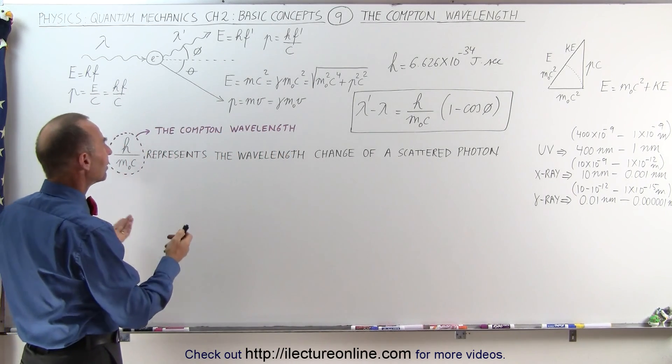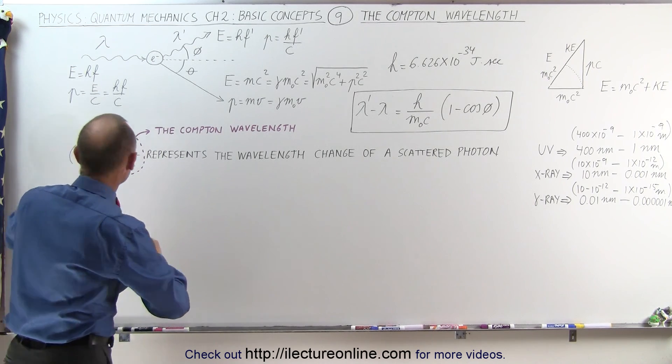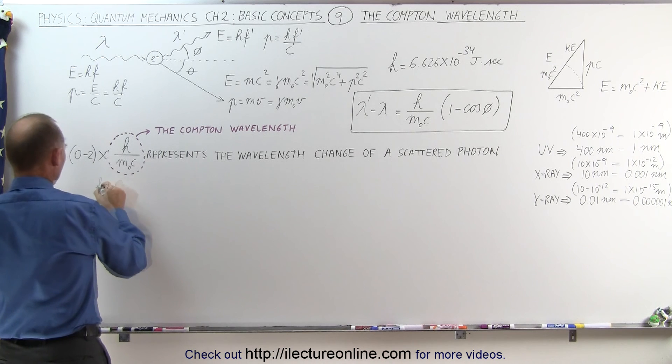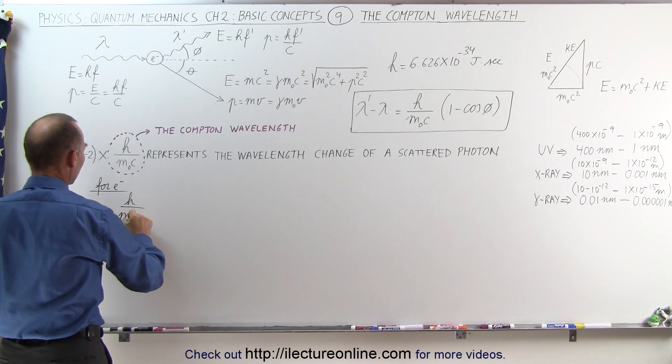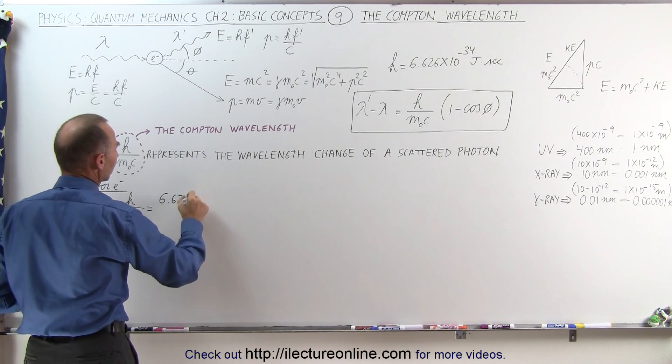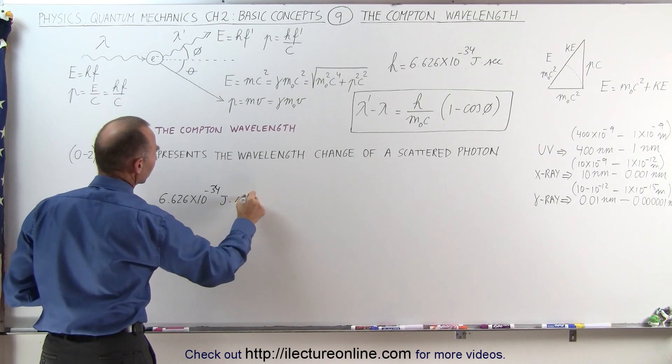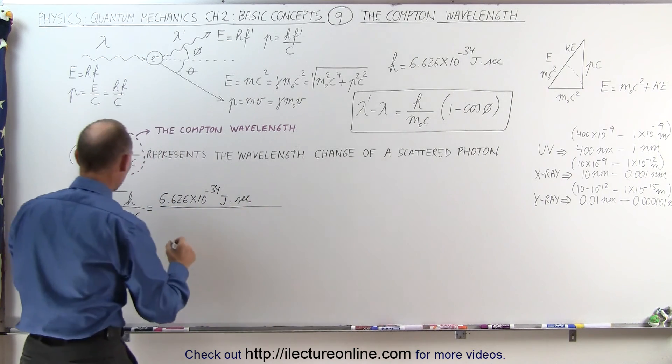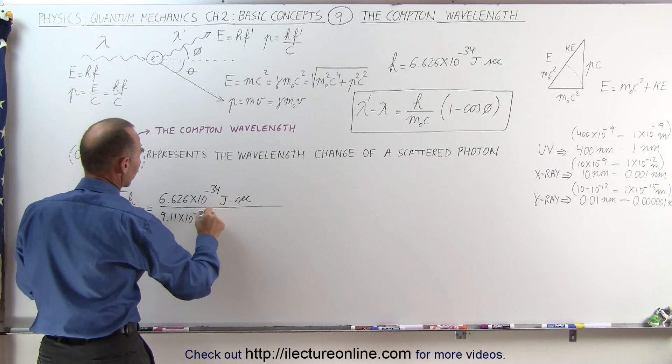Now let's calculate for an electron what this quantity would be equal to. For an electron, we can say that h divided by m sub-naught c is equal to 6.626 times 10 to the minus 34 joules time seconds, divided by the mass of an electron, which is 9.11 times 10 to the minus 31 kilograms.